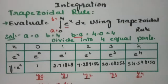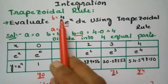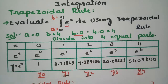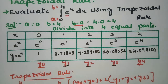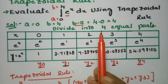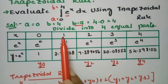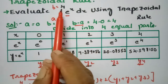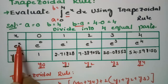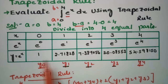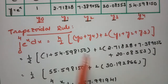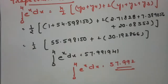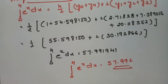So this is how we solve it — it's quite simple. After finding a and b, if n is not given, divide into 4 equal parts using h = (b - a)/n. Start from 0, keep adding 1 until the upper limit, compute the e^x values, name them y0 through y4, apply the trapezoidal formula, and we get the integral from 0 to 4 of e^x dx as 59.992.